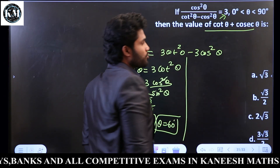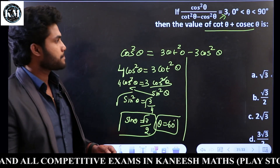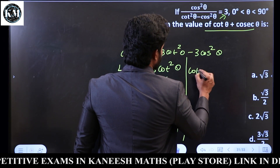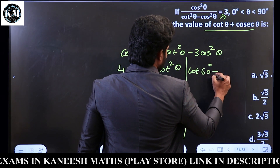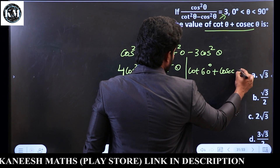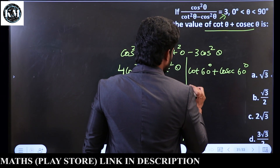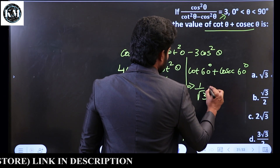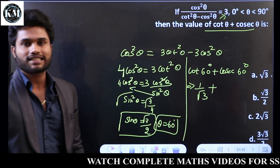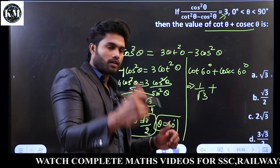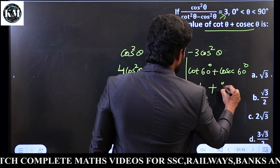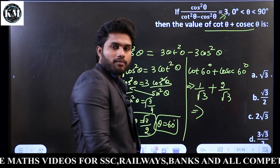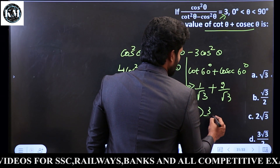So cot θ plus cosecant θ. Substituting θ = 60: cot 60 plus cosec 60. Cot 60 = 1 by root 3. Cosec 60 = 2 by root 3 (since sin 60 = root 3 by 2, inverse is 2 by root 3). So the sum is 3 by root 3.